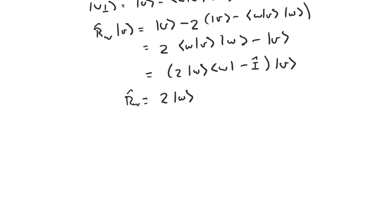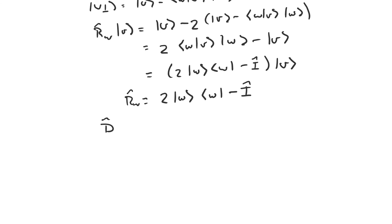This was completely general — the reflection operator about any normalized vector has this form. This turns out to be precisely the form of the Grover diffusion operator D, which equals 2 times the projection onto s minus the identity operator. Since s is a normalized vector, D is actually a reflection about s.